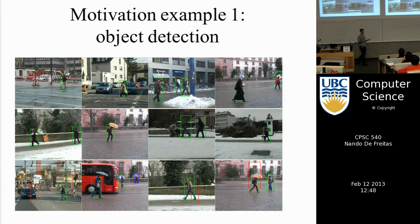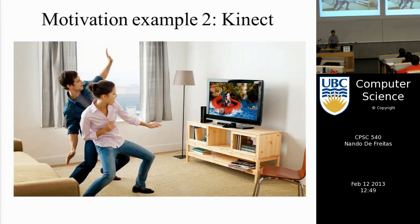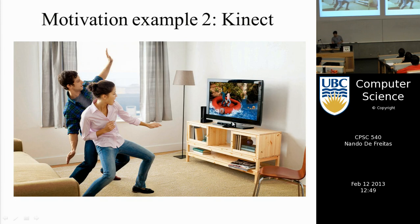Face detection in your cameras is built with the techniques we're going to cover. Just like you use them to detect faces, you could use them to detect anything — for example, pedestrians, which would be essential for building autonomous driving cars. The Kinect is essentially a device that projects an infrared grid on you so it works even in the dark.